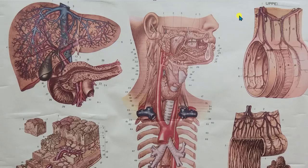The objective of this video is to go over the wall chart that shows many of the structures associated with the digestive system, both in terms of digestive system anatomy as well as the blood vessels found around some of those structures. Starting at the top of the chart, we'll work our way down toward the bottom, and there are quite a few views squeezed together on this chart.